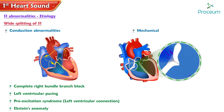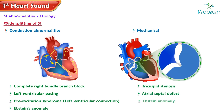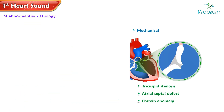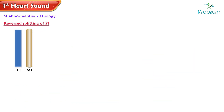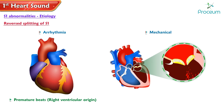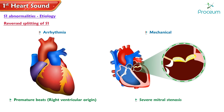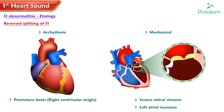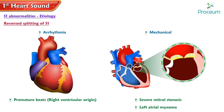Mechanical factors causing wide splitting include tricuspid stenosis, atrial septal defect, and Ebstein's anomaly. Reverse splitting of S1 may indicate specific cardiac conditions affecting valve closure timing, including arrhythmias with premature beats of right ventricular origin, as well as mechanical factors such as severe mitral stenosis and left atrial myxoma, which lead to altered S1 splitting.